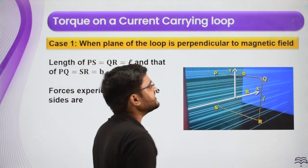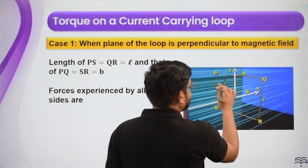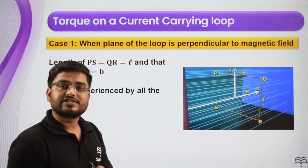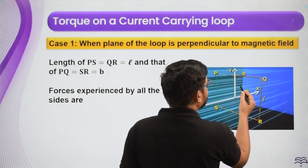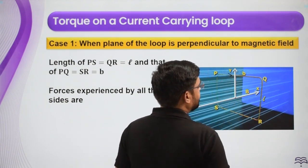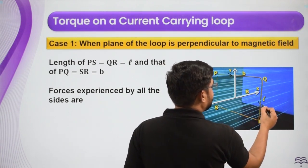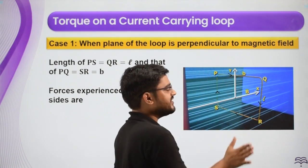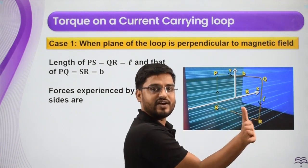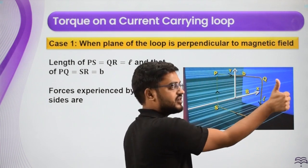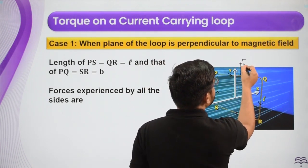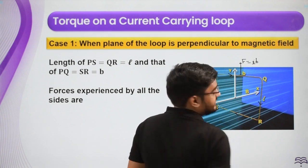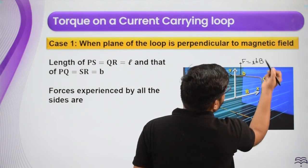Now I am finding the force experienced by each segment — PQ, QR, RS, and SP — because all of them can be treated as straight wires. For PQ, the current is coming out of the plane and the magnetic field is that way. Using the right-hand rule, the force on PQ is upward. The magnitude is ILB, where I is the current, L is the small b length, and B is the magnitude of magnetic field.